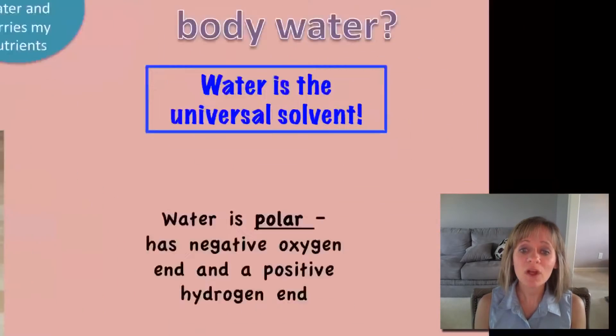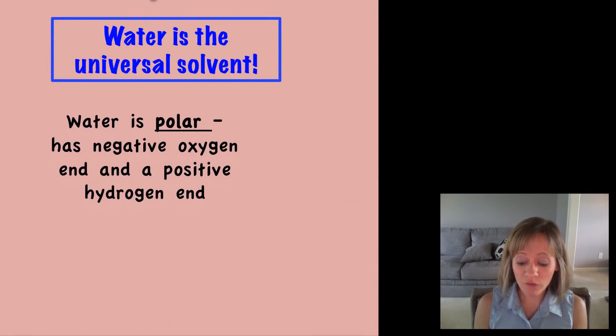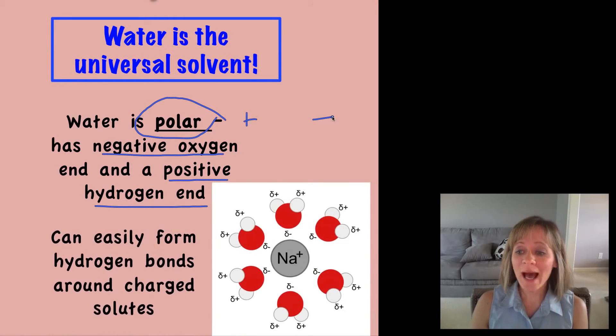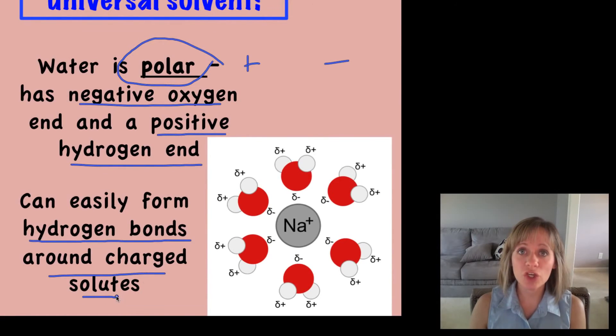Why is water a universal solvent? It's because it's polar. It has a negative end—that oxygen end—and it has a positive end. That's all that being polar means: it's got a positive end and a negative end. So what happens is it can easily form hydrogen bonds surrounding charged solutes. Let's take a sodium positive ion, for example. All of the negative oxygens can surround that sodium, and as it does that it's dissolving that sodium particle because of that negative interaction with that positive ion.